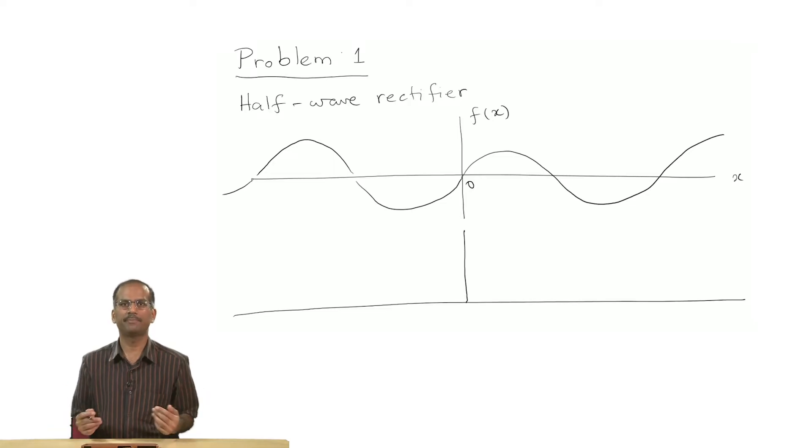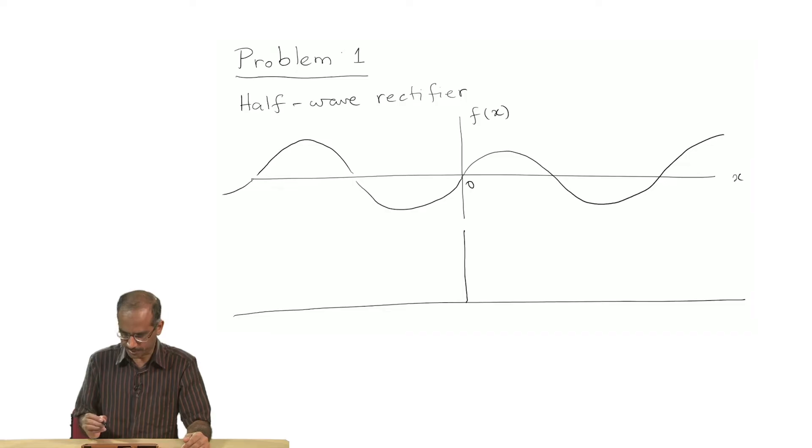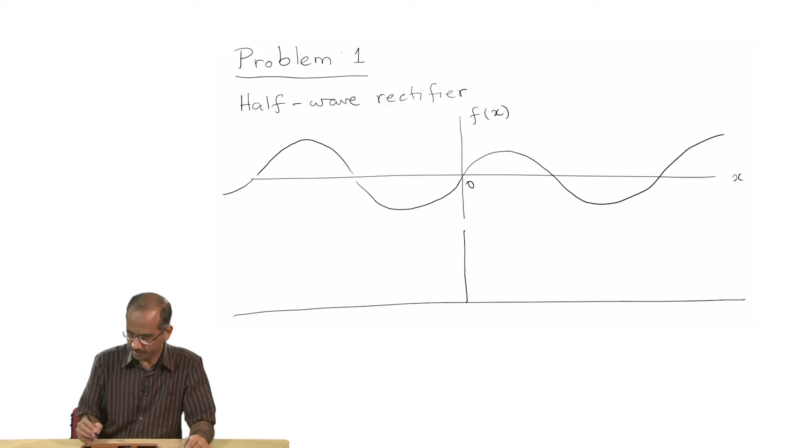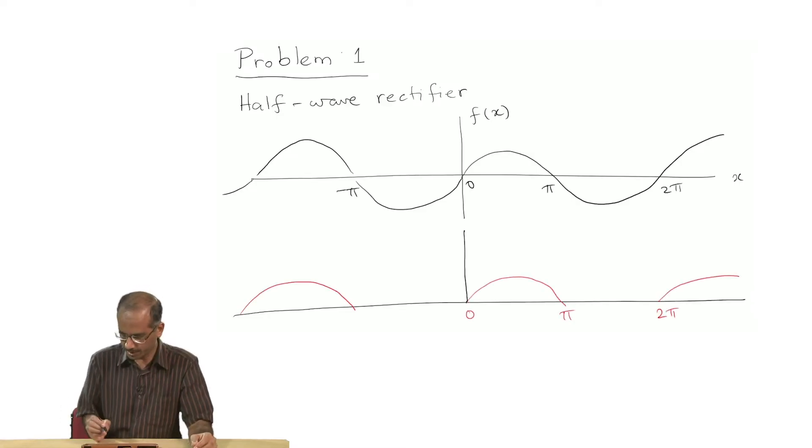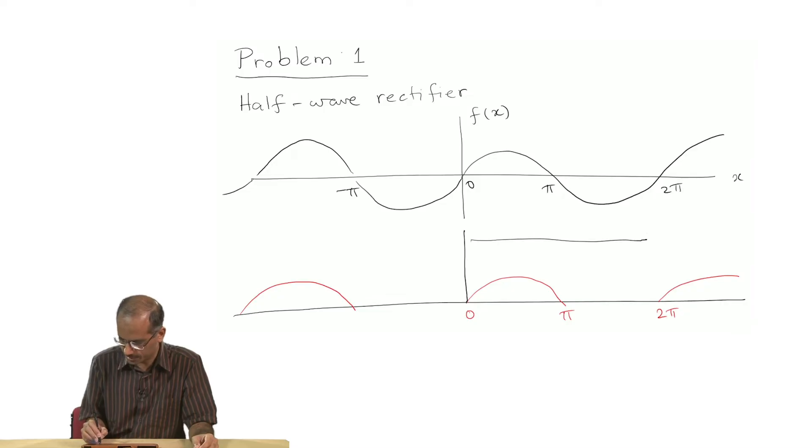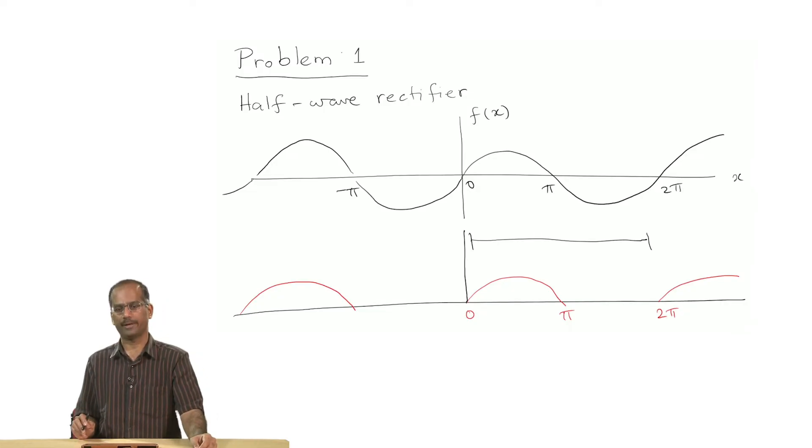It will only keep the positive parts of this waveform. In other words, once the rectification has been done, our waveform will be simply this. It is a periodic function whose basic period is this much, going between 0 to 2π.